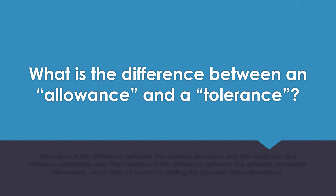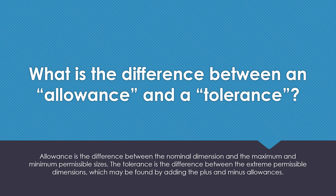What is the difference between allowance and tolerance? Allowance is the difference between the nominal dimension and the maximum and minimum permissible sizes. Tolerance is the difference between the extreme permissible dimensions, which may be found by adding the plus and minus allowances.